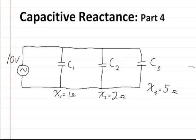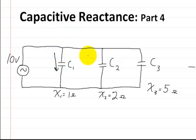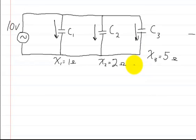This video is on capacitive reactance and it's part 4 of a series. Here we're just going to go through a quick example of how to actually find the current when you're using capacitive reactance. We want to know what the current in this branch is, in this branch, and in that branch. So let's solve for the first one.